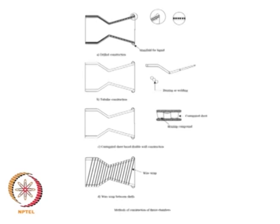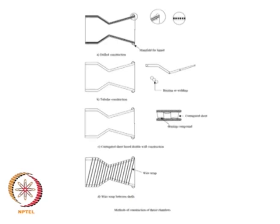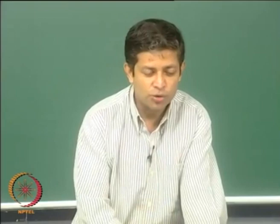Then you have something known as a tubular construction, which is a lot better than the earlier one. Here you have two layers: one is the chamber that is the inner layer, and on top of it you have pipes that are brazed. You can decide on the pipe size as you go from the divergent portion to the throat and to the head end — this is in some sense a lot more controllable. You will have an outer skin on top, and the pipes are brazed or welded together to keep them in contact; otherwise you get hot spots in regions where there is no liquid coolant.